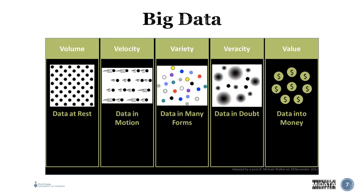Now we've been talking about data a lot, and we've mentioned the term big data. So let's address big data — what is big data? Originally there were three V's to describe big data: volume, velocity, and variety. Volume is very simply how much data you have. If you have a very large amount of data, you could potentially consider it big data.